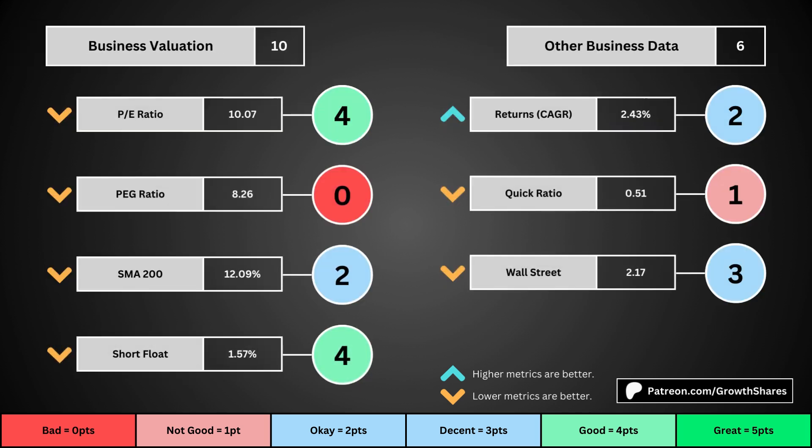This third set of metrics deals with the valuation of the company's stock based on its business. Think of the P/E ratio as a measure of speculation around the stock — we want it low. The PEG ratio adds earnings growth with the P/E ratio. Then, the 200-day simple moving average is the average stock price over that period; we want that low because it means we have a cheaper stock price. And short float is basically how bearish other investors think of the stock.